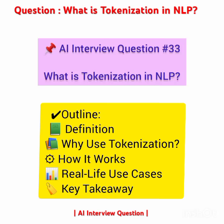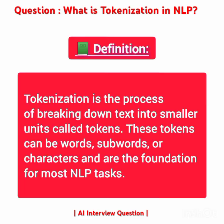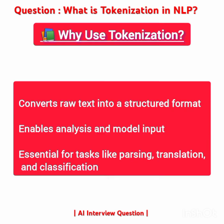What is tokenization in NLP? In definition, tokenization is the process of breaking down text into smaller units called tokens. These tokens can be words, subwords, or characters, and are the starting point for most NLP tasks.